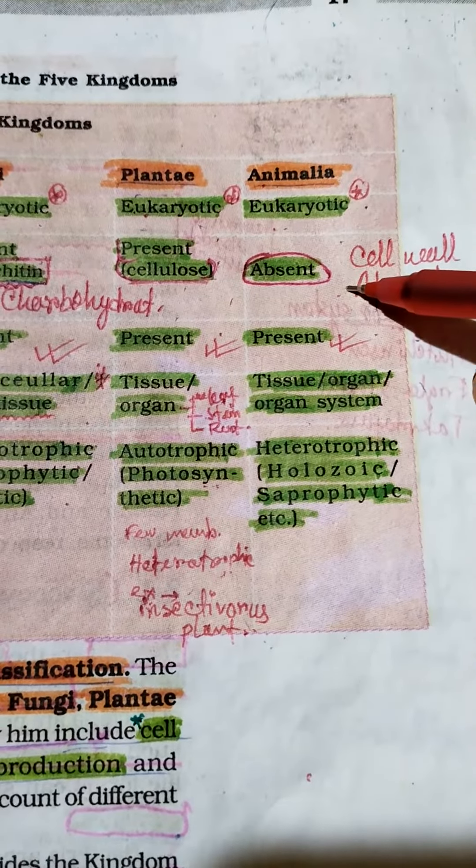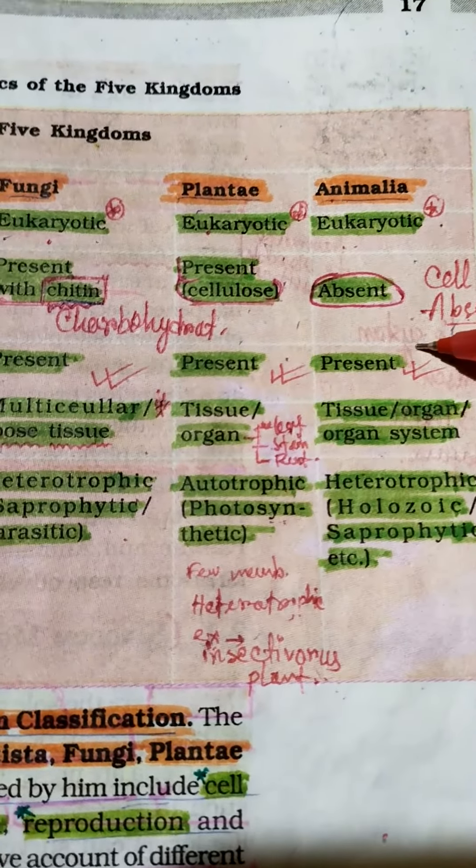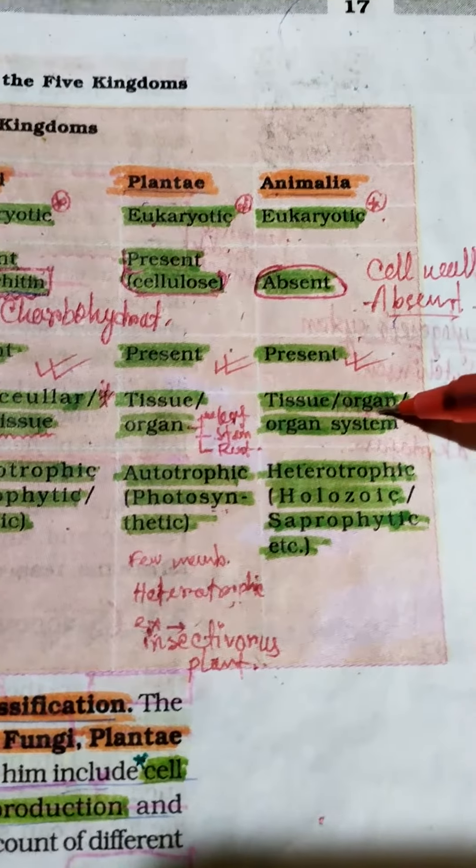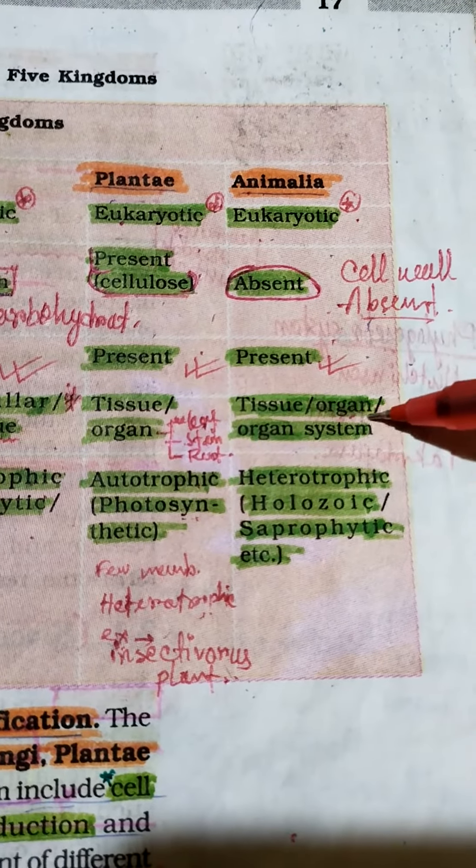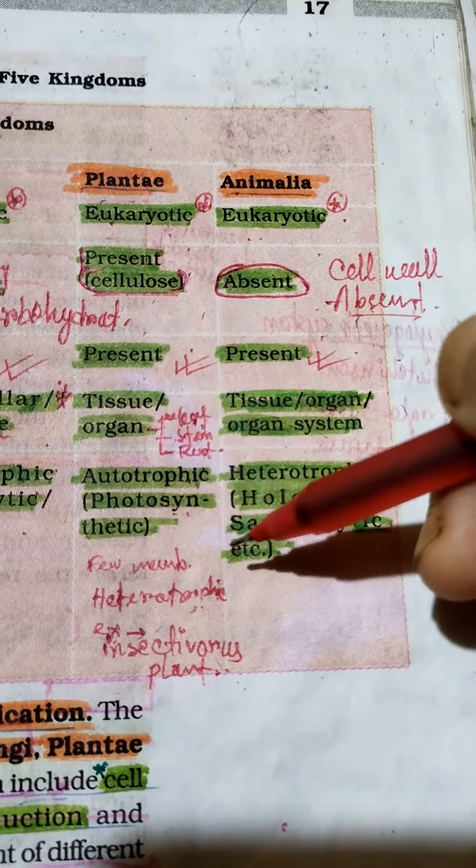Animalia have eukaryotic cell type, cell wall absent, nuclear membrane present, and body organization of tissues, organs, and organ systems. Mode of nutrition is heterotrophic.